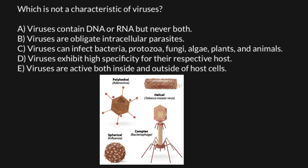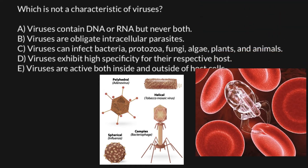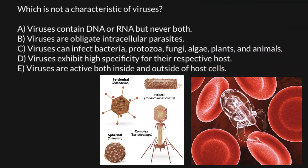We have a polyhedral virus, helical virus, complex virus that consists of many different parts, and spherical. If you think that nanomachines or nanorobots would look something like this picture, you're very mistaken — because nanomachines or nanorobots would actually look like a virus.